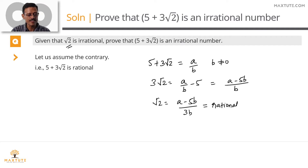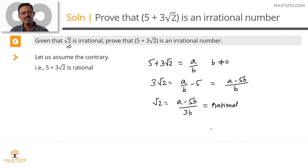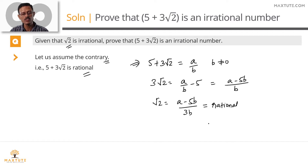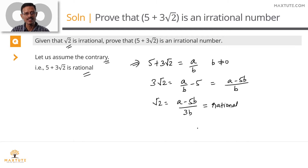But the question explicitly states — and we know — that root 2 is irrational. So there is a contradiction. This contradiction arose because of the incorrect assumption we made that 5 plus 3 root 2 is rational. We assumed the contrary, which is why we ended up with this contradiction. This completes the proof that 5 plus 3 root 2 is an irrational number.